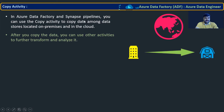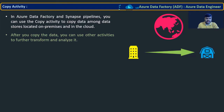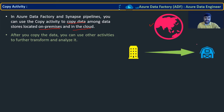In Azure Data Factory, in a pipeline, you can use copy activity to copy data among data stores located on-premises and in the cloud. The main thing is you can move or copy data from one location to another — from on-prem to on-prem, on-prem to cloud, or cloud to on-prem. Globally, from anywhere to anywhere, you can move data.